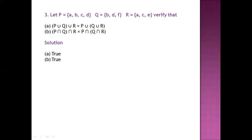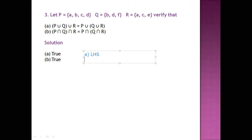So for proving part (a): the LHS says (P union Q) union R. We calculate P union Q first. What will P union Q denote? In P union Q we will try to cover all elements of P and Q.